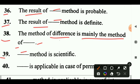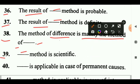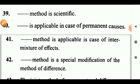Question 39: Dash method is scientific. Answer: The method of concomitant variation is scientific. Question 40: Dash is applicable in case of permanent causes. Answer: The method of concomitant variation. Question 41: Dash method is applicable in case of intermixture of effects. Answer: The method of concomitant variation.